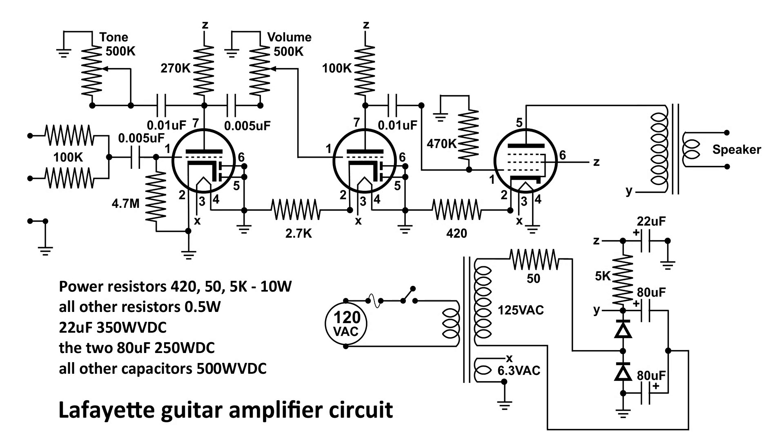There are three audio coupling capacitors in this Lafayette guitar amplifier circuit. The first one is all the way to the left. That's the input to the first amplifier stage.